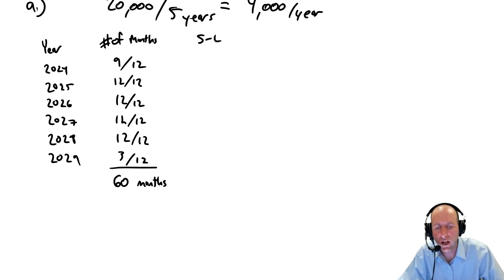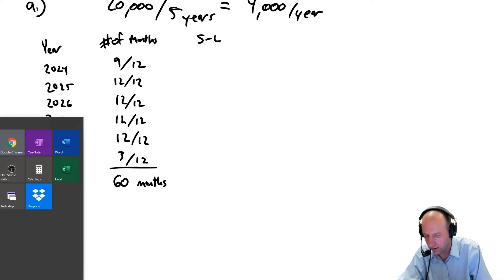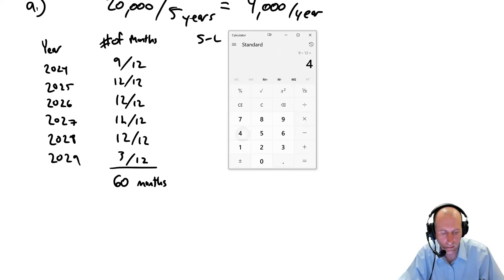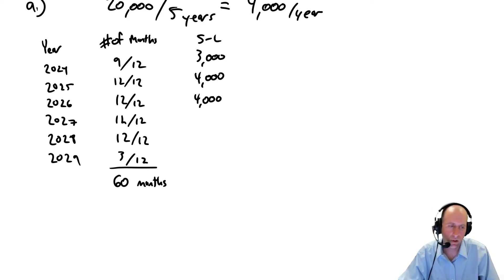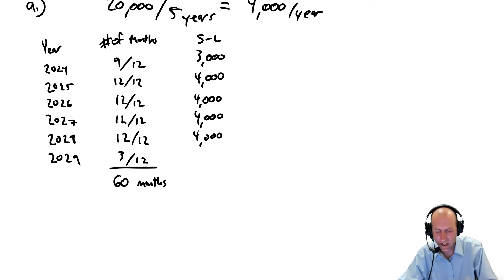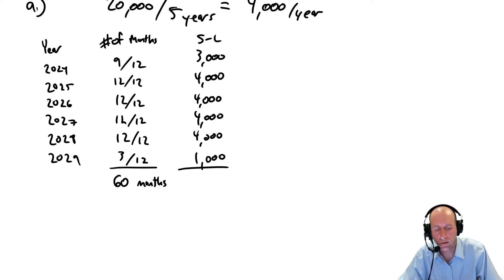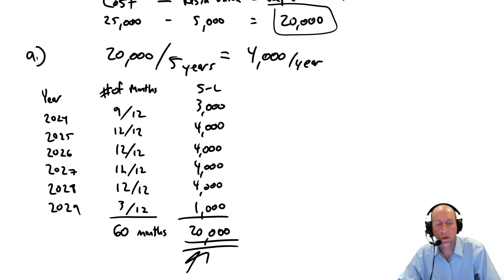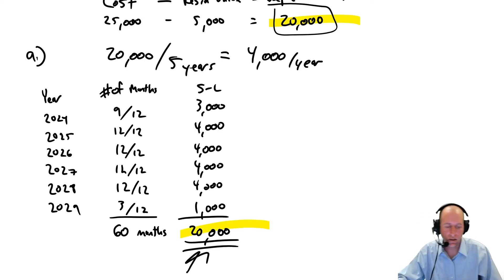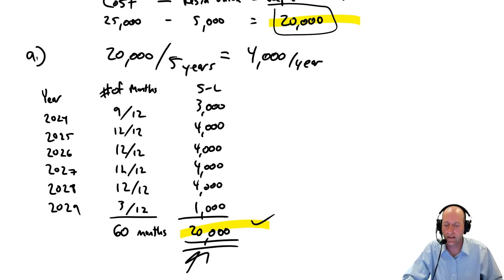Our straight line depreciation is $4,000 a year. In year one, nine twelfths of $4,000 is $3,000. In year two, a full year is $4,000. Years three, four, and five are also $4,000 each. And in the final year, three twelfths times $4,000 is $1,000. When I total this up — 3,000 plus 4,000 plus 4,000 plus 4,000 plus 4,000 plus 1,000 — I get $20,000 as my total depreciation, which matches the depreciable cost. My amortization schedule is confirmed, and that's my game plan for depreciation on this asset.